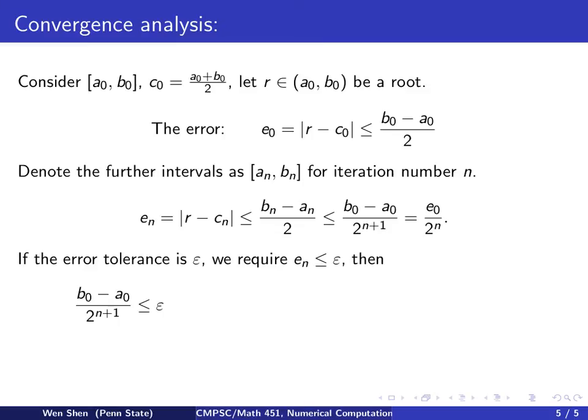Now let's assume we have some error tolerance denoted by epsilon. We need to require error en shall be less than epsilon. This means using this expression here, we would have this requirement if after n iterations we want the error to be less than epsilon. In order to find the number of iterations needed to achieve the required error tolerance, one will have to solve this inequality.